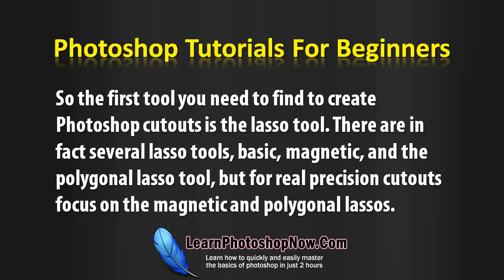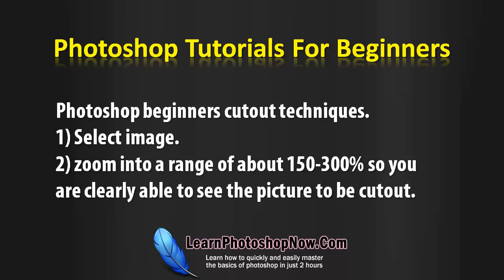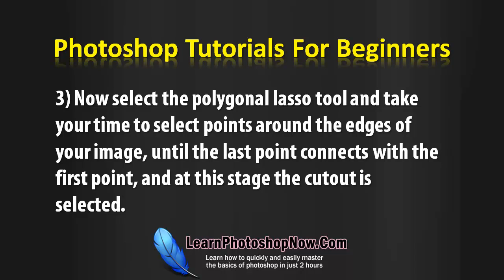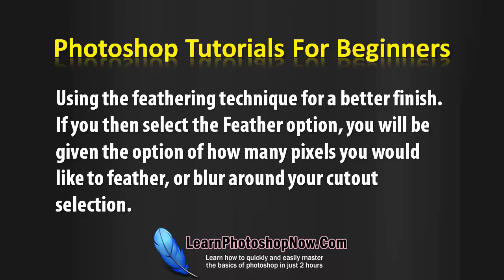Photoshop beginners cutout techniques: First, select the image and then proceed to zoom in at a range of about 150–300% so you are clearly able to see the picture to be cut out. Then select the polygonal lasso tool and take your time to select points around the edges of your image until the last point connects with the first point. At this stage the cutout is selected using the feathering technique for a better finish.